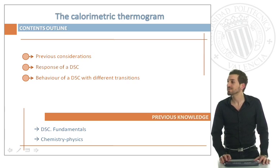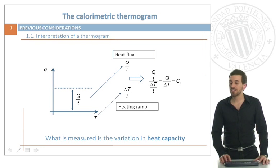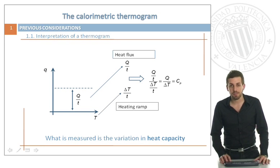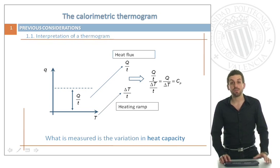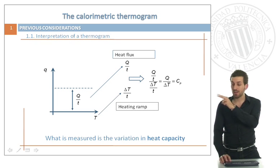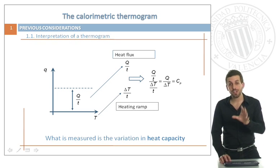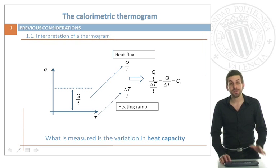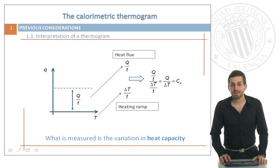The first question is: what is our DSC really measuring? The response that we obtain is the relationship between the heat flux and the temperature. If we divide both parameters, what we are really obtaining is the heat capacity. So, we are measuring variations in heat capacity.